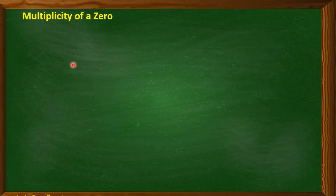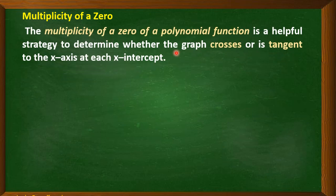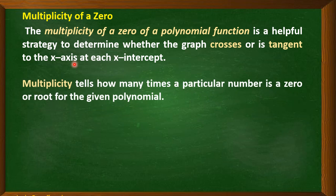Now, I'm going to discuss about the multiplicity of a zero or a root. The multiplicity of a zero of a polynomial function is a very helpful strategy to determine whether the graph crosses or is tangent to the x-axis at each x-intercept. Multiplicity tells how many times a particular number is a zero or a root for the given polynomial.